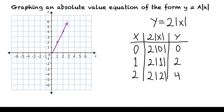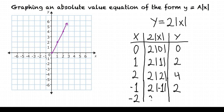Let's see what happens if we plug in some negative values for x. If we plug in negative 1, then 2 times the absolute value of negative 1 equals 2, because the absolute value of negative 1 is positive 1 and 2 times 1 is 2. If we try negative 2, then 2 times the absolute value of negative 2 is 2 times 2, which gives us 4.